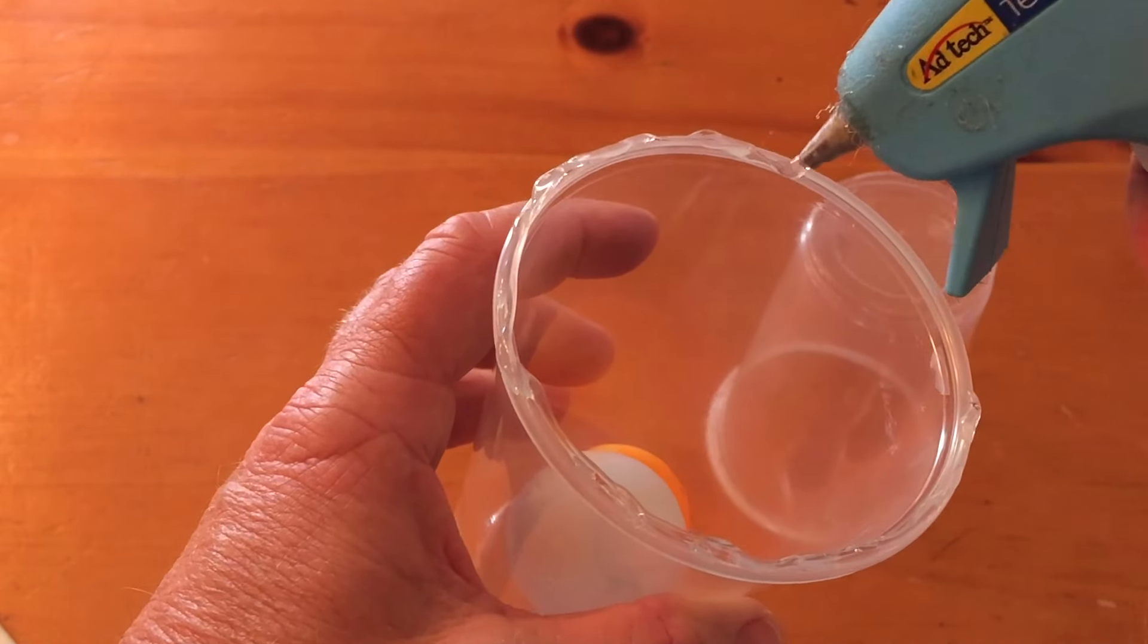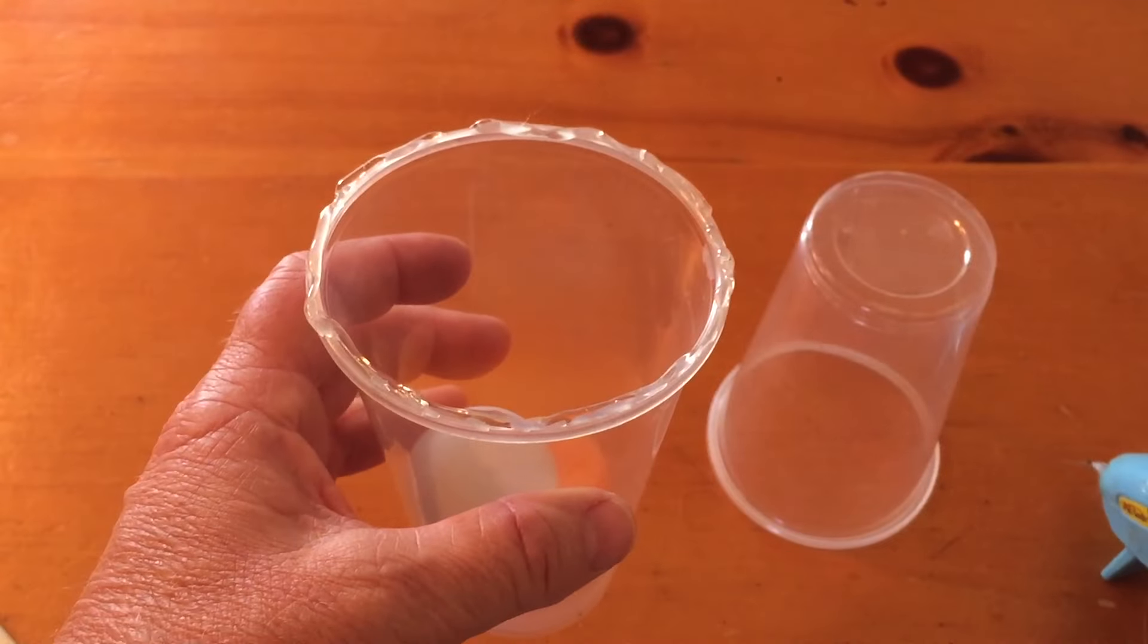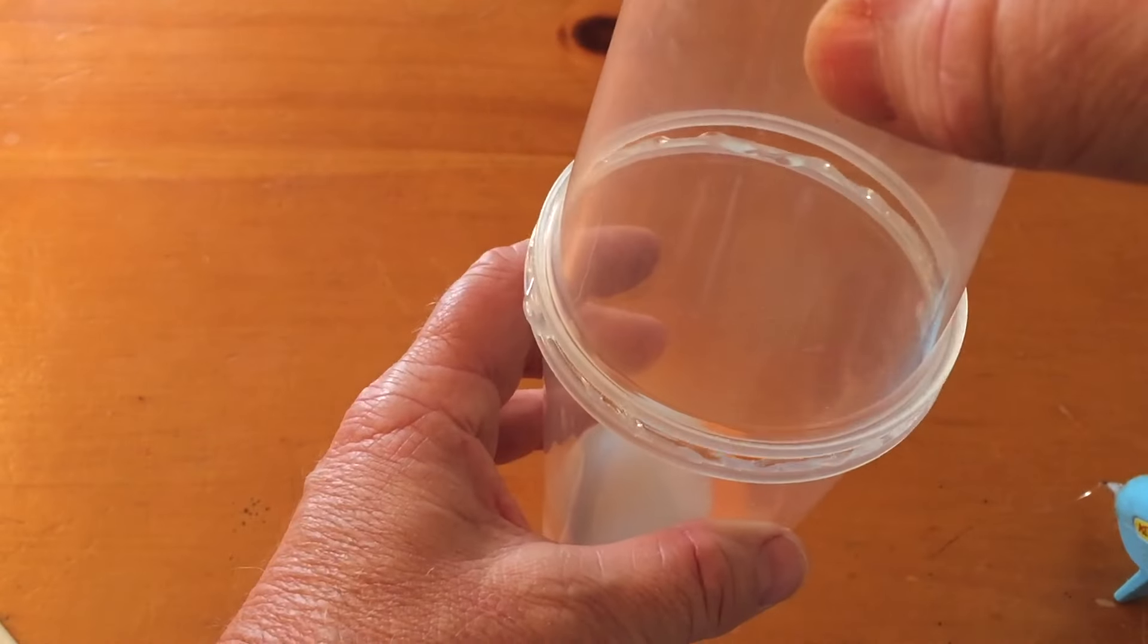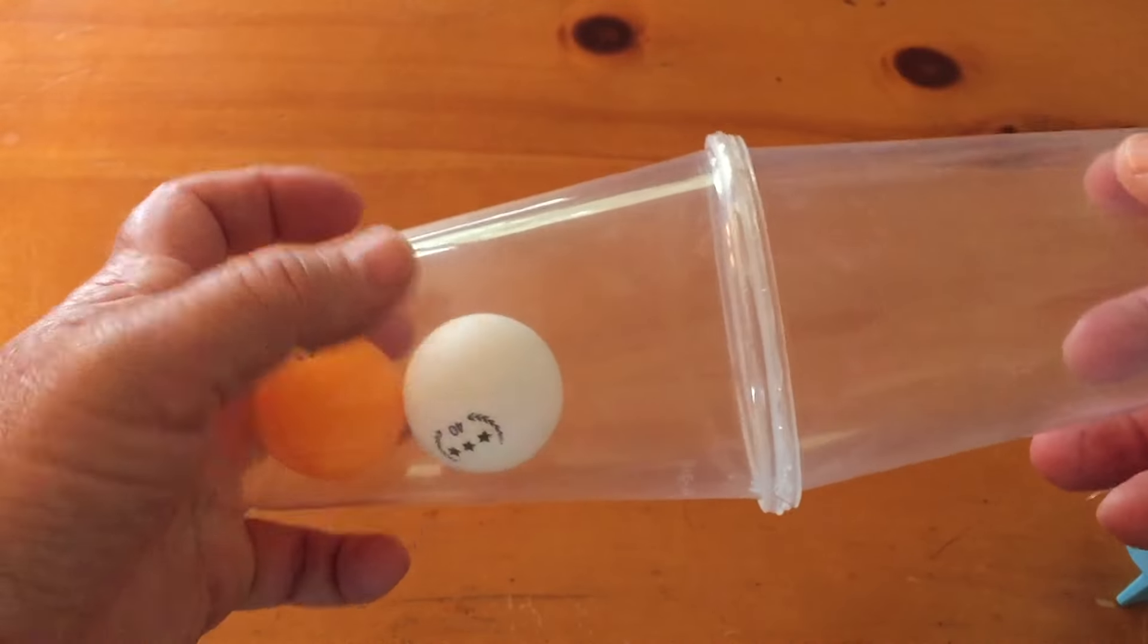And when you get completely all the way around with the glue, then you're going to take the other cup and seal it off by just putting it on top. The hot glue should glue within 15, 20 seconds. Varies on each gun.